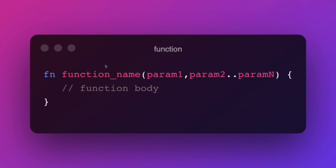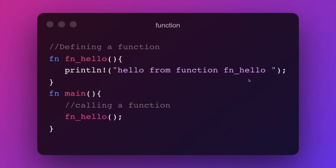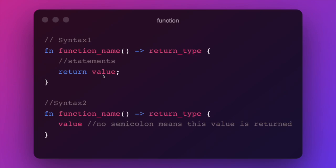Now let's talk about functions in Rust. Functions are defined using the `fn` keyword with curly brackets — pretty similar in structure to other languages. We name our function and select its input parameters. We already defined our first function in the Hello World program — the `main` function, which is the main entry point. Here we can see our `main` function calling a different function `fn_hello`, which prints out 'Hello from function fn_hello' — a basic example of calling different functions in Rust.